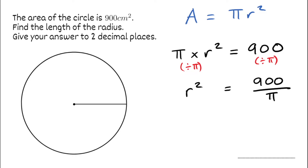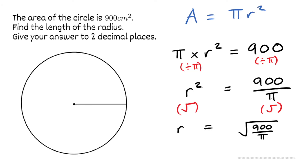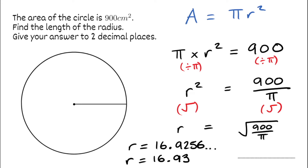Now I need to find what r is. To get from r squared to r, we simply take the square root. To keep things equivalent, because we've square rooted the left-hand side, we also square root the right-hand side. So the radius would be the square root of 900 divided by pi. We can do that all on the calculator in one go — the square root of 900 divided by pi gives us 16.9256 and a few extra. So the radius to two decimal places would be 16.93. Our area was in centimetres squared, which means the length dimension is centimetres. So our radius is 16.93 centimetres.